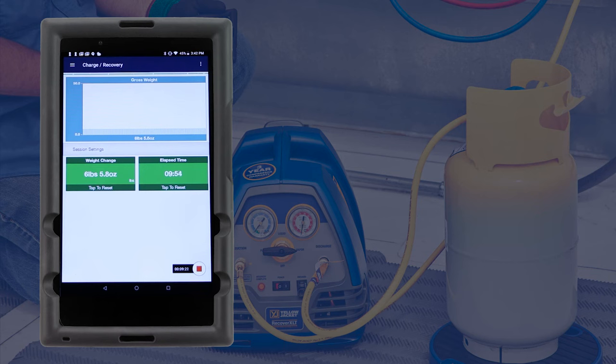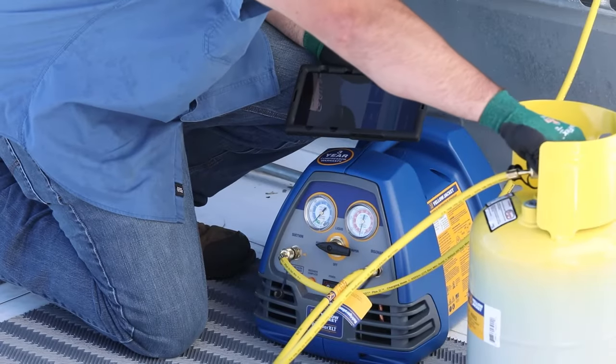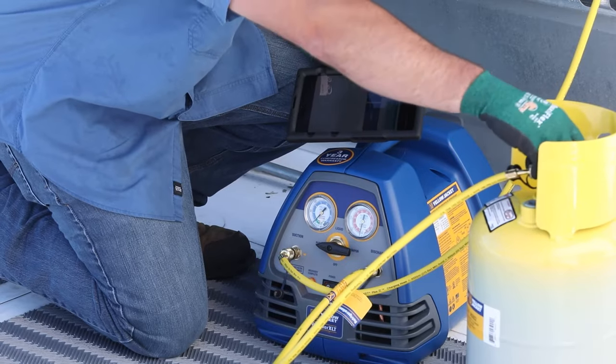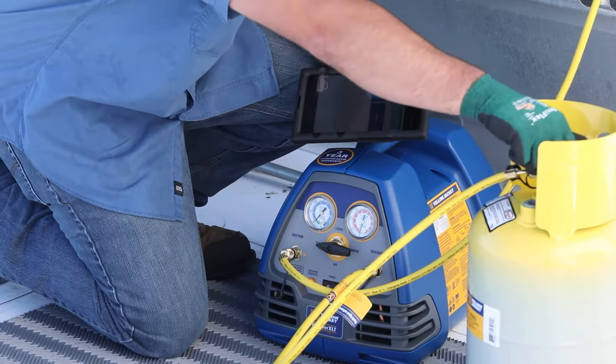Once the proper vacuum level has been reached, the machine will again power off and recovery is complete. Close the tank valve. We now have an accurate measurement of the refrigerant recovered from this system.